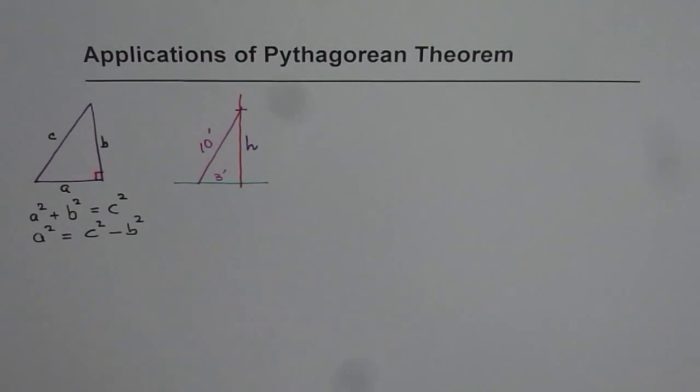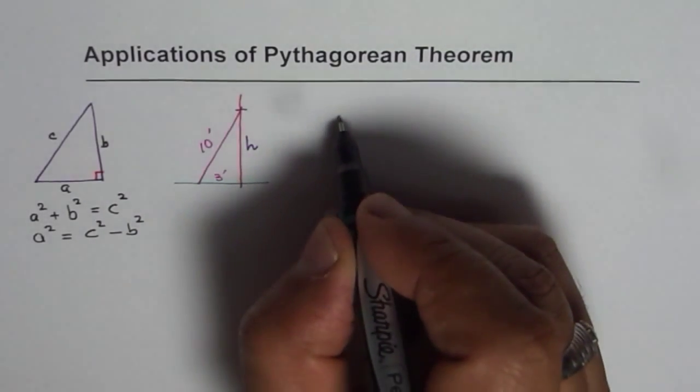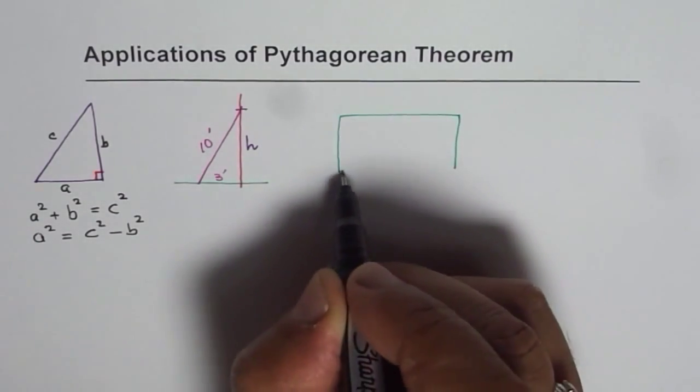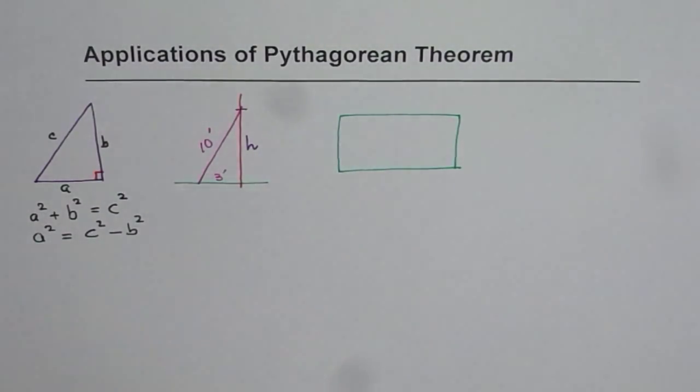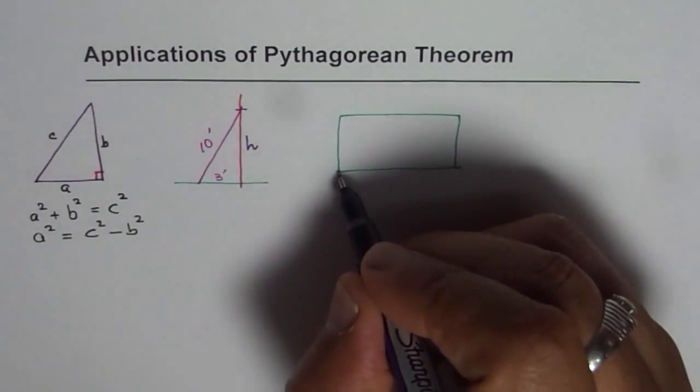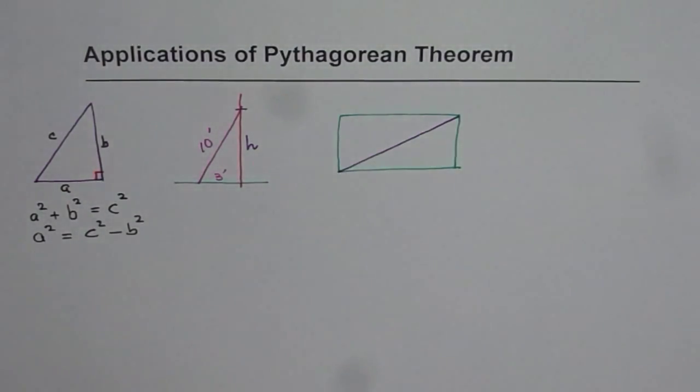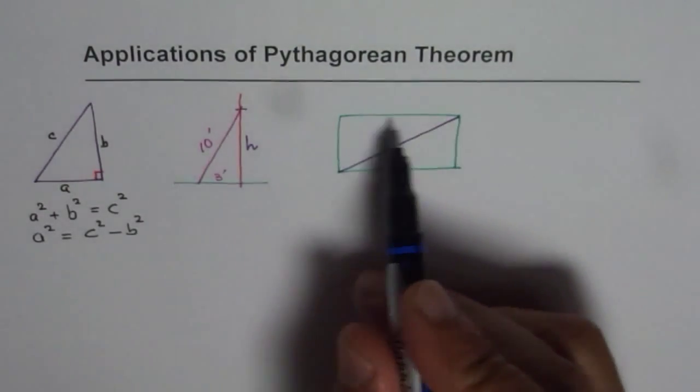At times we may have a question based on rectangle. Now given any two sides of rectangle, that is length and width, we can find the diagonal of a rectangle. This particular application finds wide use.